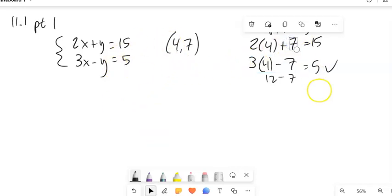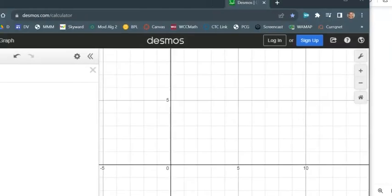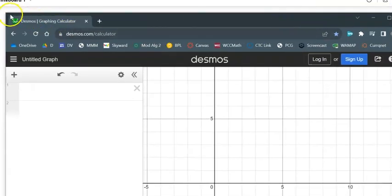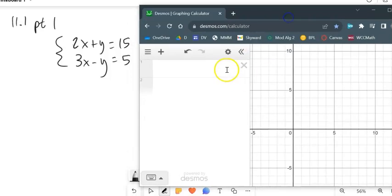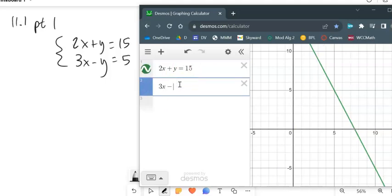So one of the things that I want us to do is think about this as a graph. Think of these as lines. If you're to graph both of these, they're straight lines. Now I'm going to show you how to do it by hand here in a moment, but I'm going to use Desmos just to graph them real quick. So one of them is 2x plus y equals 15. The other one is 3x minus y equals 5.